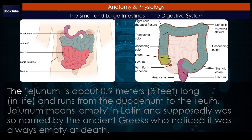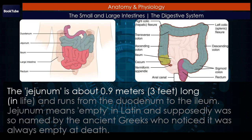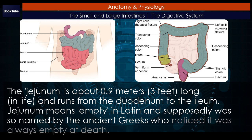The hepatopancreatic sphincter (sphincter of Oddi) regulates the flow of both bile and pancreatic juice from the ampulla into the duodenum. The jejunum is about 0.9 meters (3 feet) long in life and runs from the duodenum to the ileum. Jejunum means empty in Latin and supposedly was so named by the ancient Greeks who noticed it was always empty at death.